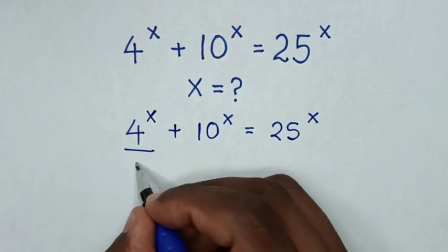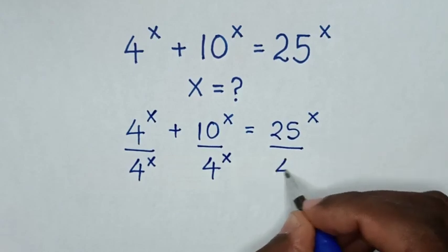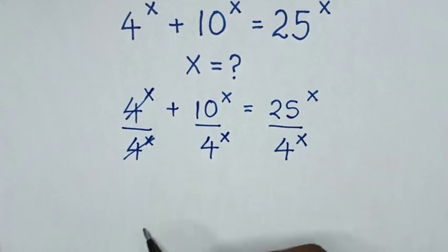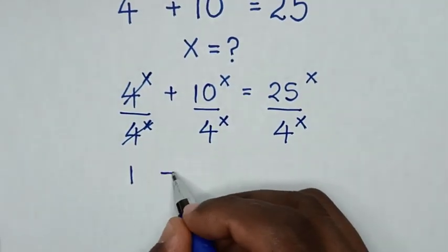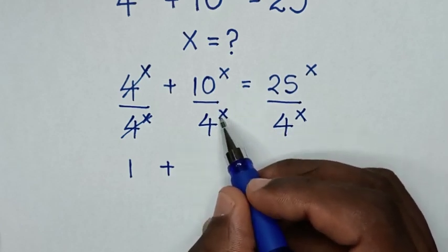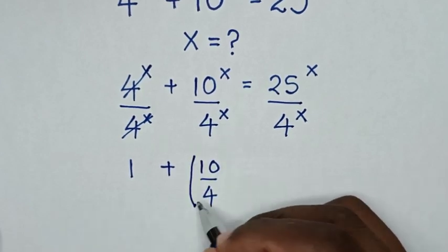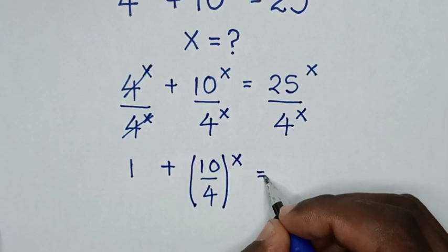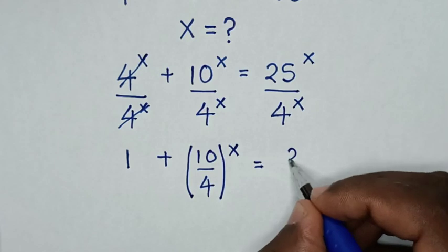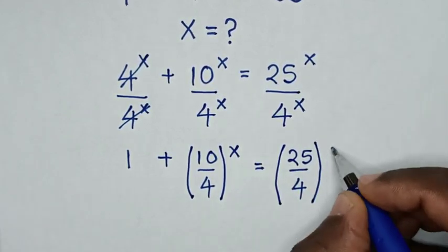So first we divide by 4 power x on both sides. Then 4 power x divided by 4 power x is 1. Then plus this exponent divided by this exponent — they have a common power of x — so it will be (10 over 4) bracket power of x, is equal to (25 over 4) bracket power of x.